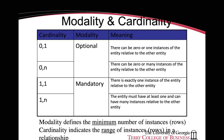This depicts the relationship between modality and cardinality. You can see that modality refers to optionality and either has a value of zero or one. Cardinality, on the other hand, establishes the upper limit. This extends our previous depiction of relationships that are one-to-many or many-to-many to specify both the minimum and maximum values of the instances of entities at both ends of the relationship.